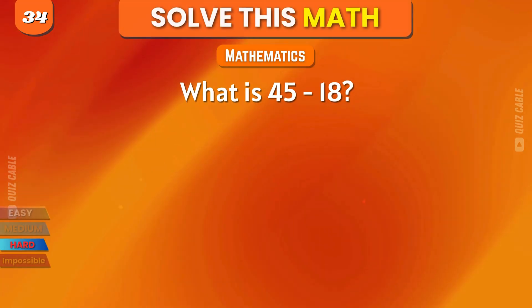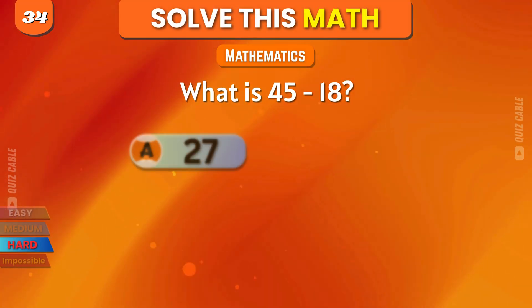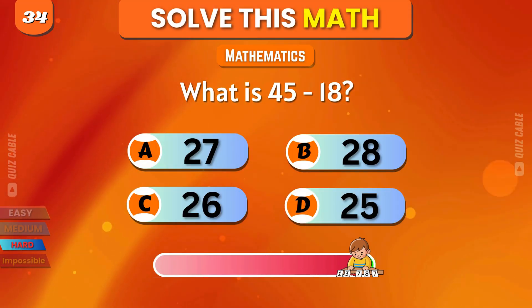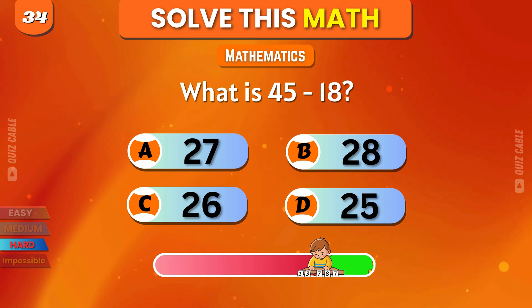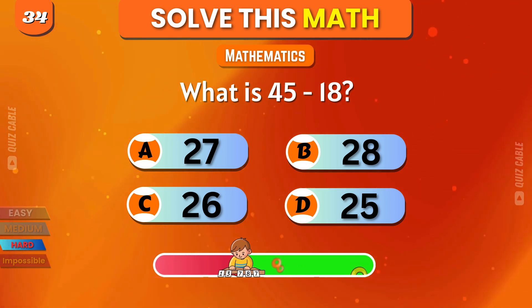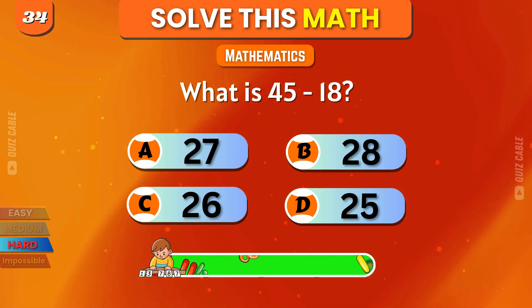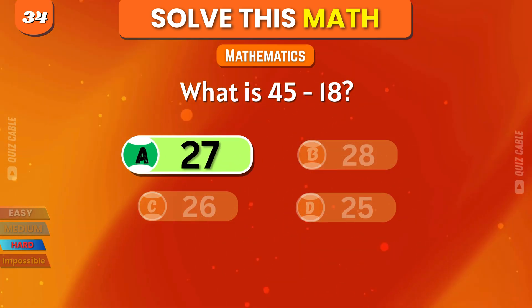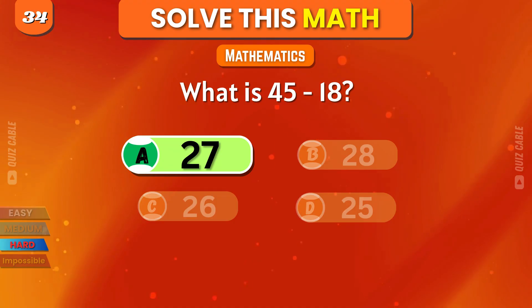What is 45 minus 18? 27, 28, 26, 25. Correct, 27.